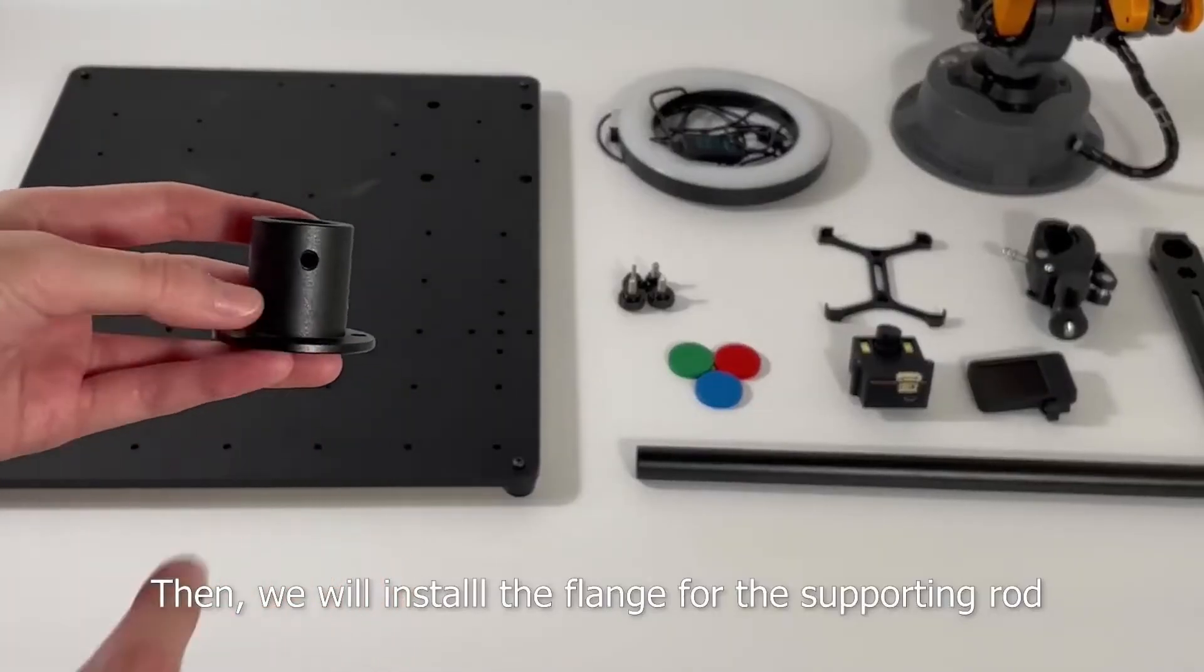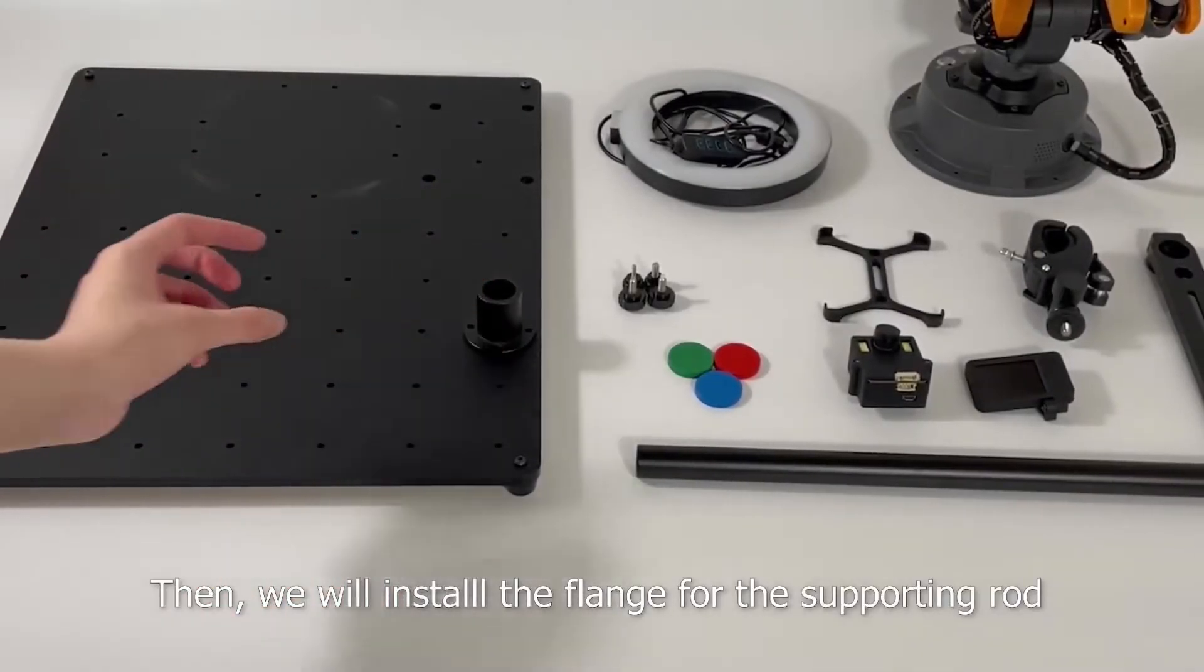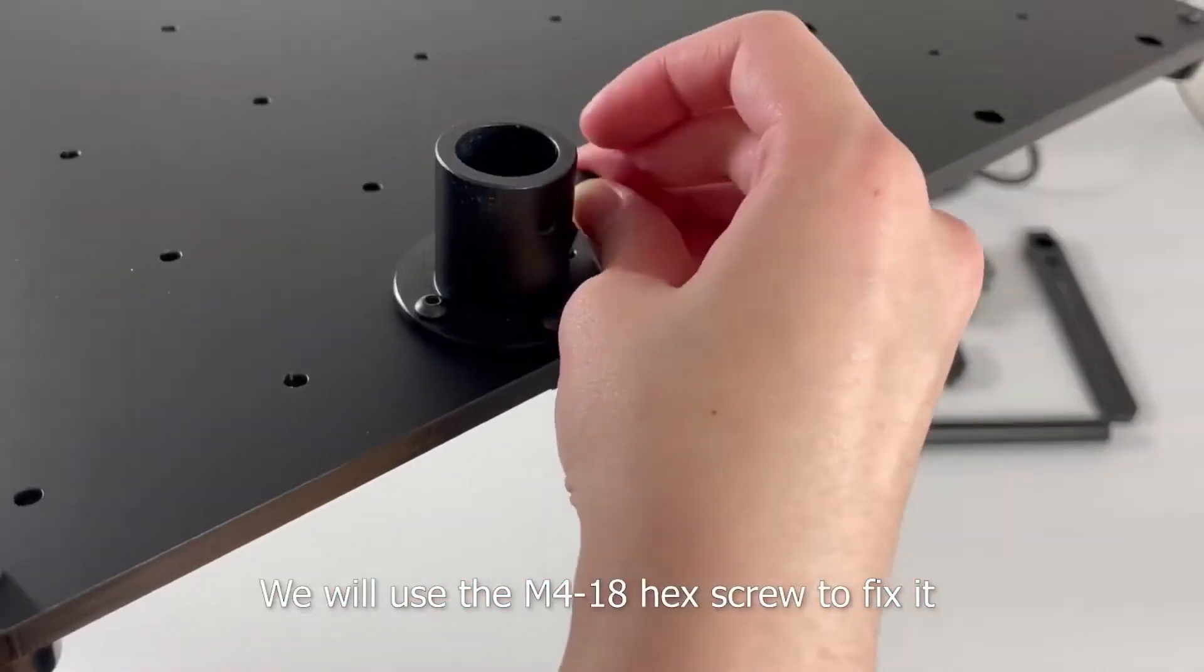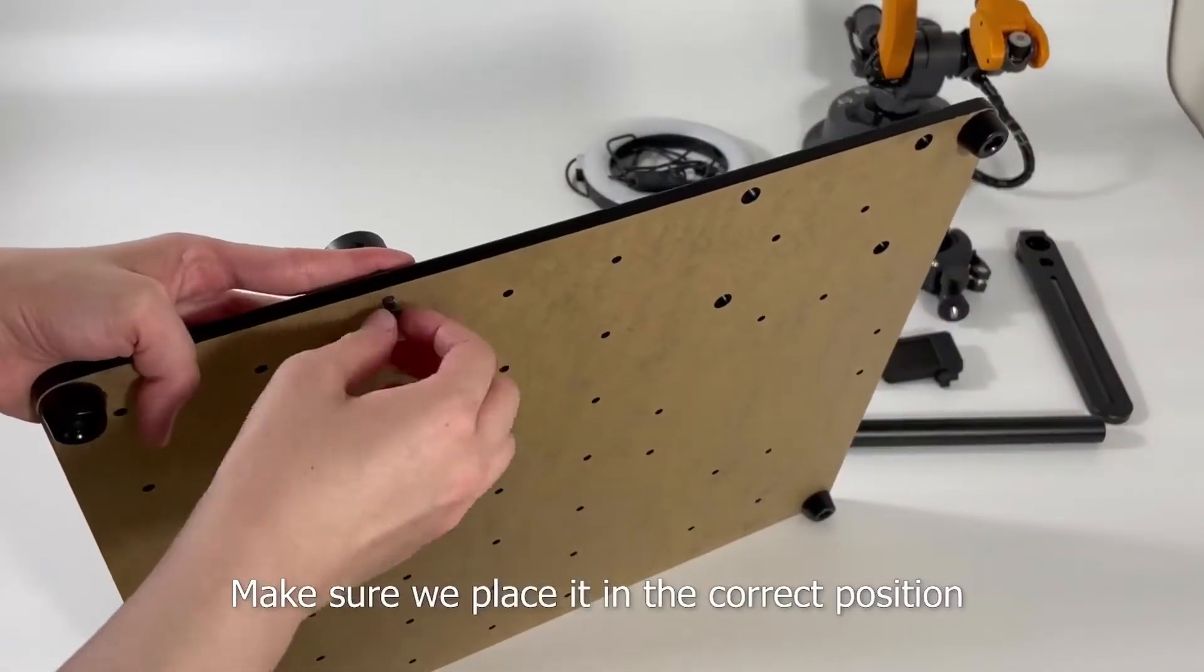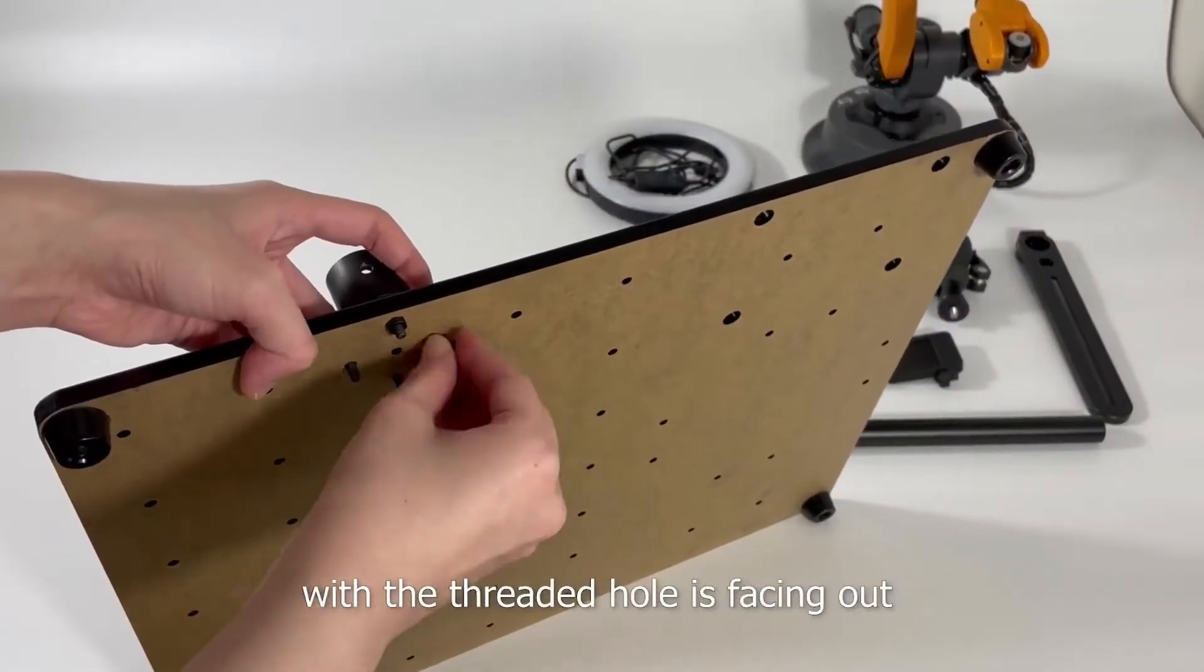Then, we will install the flange for the supporting rod. We will use the M418 hex screw to fix it. Make sure we place it in the correct position where the threaded hole is facing out.